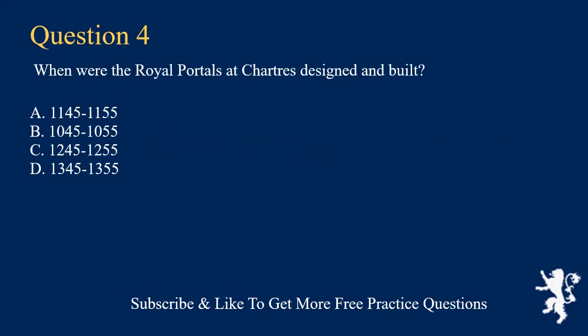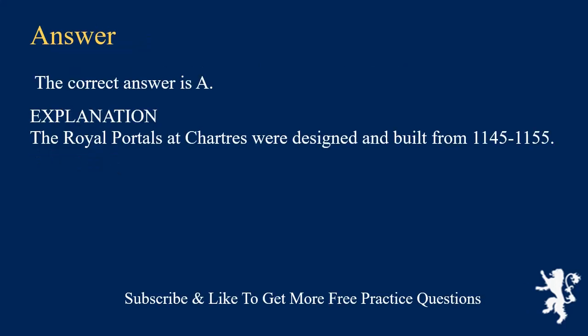When were the royal portals at Chartres designed and built? A. 1145–1155. B. 1045–1055. C. 1245–1255. D. 1345–1355. The correct answer is A.